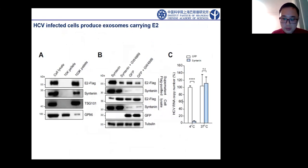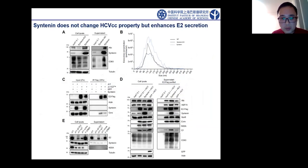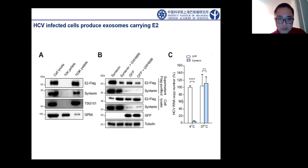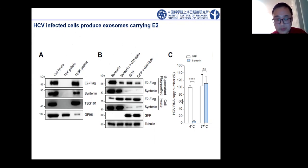By biochemical IP analysis, we got this conclusion and further confirmed it by drug treatment. When we used GW4869 — an EV biogenesis inhibitor compound — we could see the supernatant level of E2 decreased in the presence of this EV biogenesis compound.